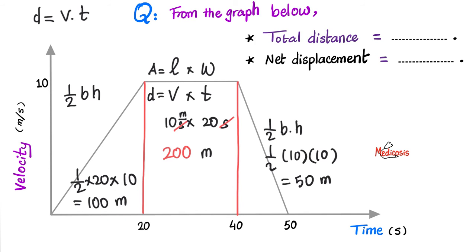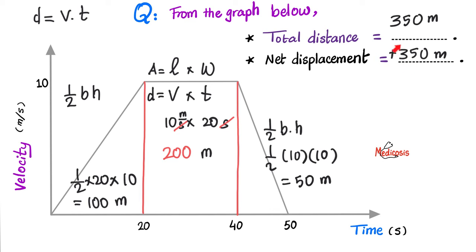So here we have 100 meters, 200 meters, and 50 meters. The total distance equals 100 meters plus 200 meters plus 50 meters, which is simply 350 meters. How about the net displacement? Well, since all of these are positive numbers, it really doesn't matter — you add them again: 100 plus 200 plus 50 equals 350 meters. All of them are in the positive direction. If you're sophisticated, you can write positive 350 meters to show your teacher or professor that you understood that displacement is a vector, meaning it has a magnitude and a direction.